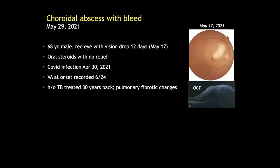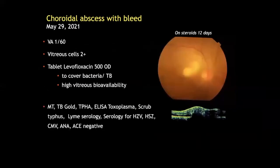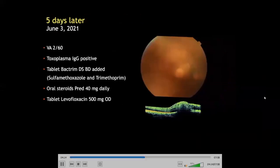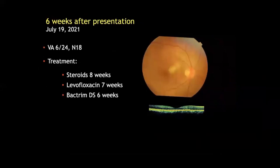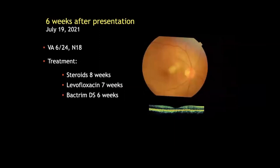In May this year we had a 68-year-old male with complaints of red eye and vision drop that started two weeks after his COVID infection. He was on steroids when he came to us. We placed him on additional tablet levofloxacin and investigated him for this subretinal lesion. Toxoplasma IgG was positive in the serum, so tablet Bactrim was added. At six weeks there was complete resolution of the lesion, but we still do not know the etiology.